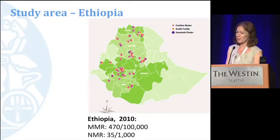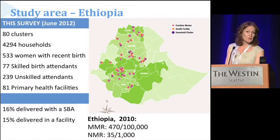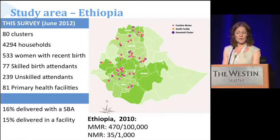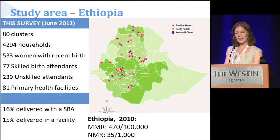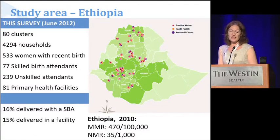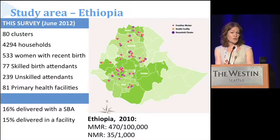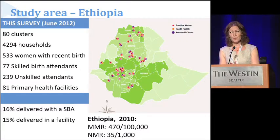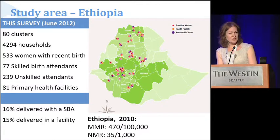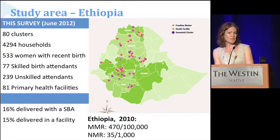In Ethiopia, we sampled from across the four main populous regions — Amhara, Oromia, Tigray, and SNNP — and went to over 4,000 households, 533 women, 77 skilled birth attendants, and 81 primary health facilities. The coverage of skilled birth attendants was lowest across the three geographies in Ethiopia, consistent with what we already know from DHS and other surveys. It was estimated at 16% amongst this group of women, with 15% having delivered in a health facility.